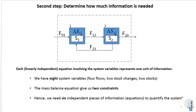In the second step, we count the items of information we have in our system and quantify what we already know and how much additional information we need. In our system we have eight system variables: four flows, two stock changes, and two stocks. Because we have two processes, there are two mass balance equations which give us two constraints. That means out of these eight system variables, we need only to quantify six of them. We need six independent pieces of information to quantify the system because the two other pieces are given by the mass balance equations.